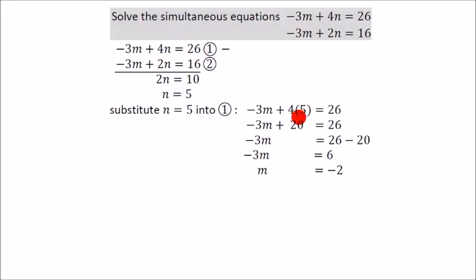But you don't have to. This means 4 times 5, so this becomes minus 3m plus 20 equals 26. This plus 20 becomes minus 20 on the other side, so minus 3m equals 6, m equals minus 2.